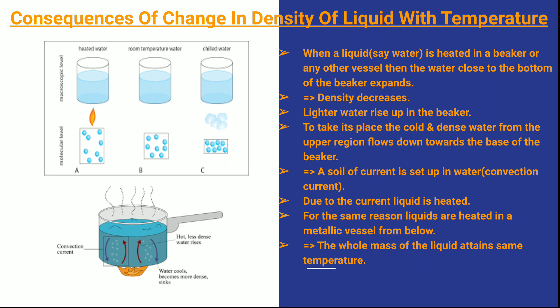When a liquid — say water — is heated in a beaker or any other vessel, the liquid close to the bottom of the beaker starts expanding. When it is heated from below, it starts expanding from the bottom. The density near the bottom of the vessel decreases, and when density decreases, the liquid becomes lighter, so the water rises up in the beaker.